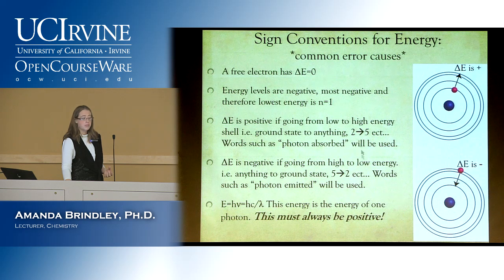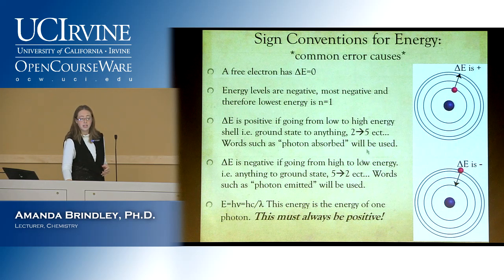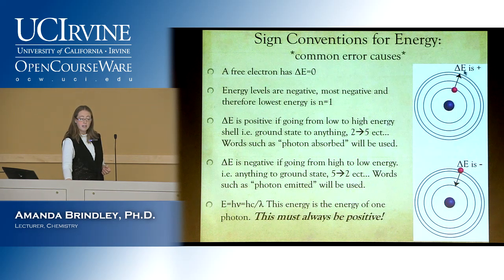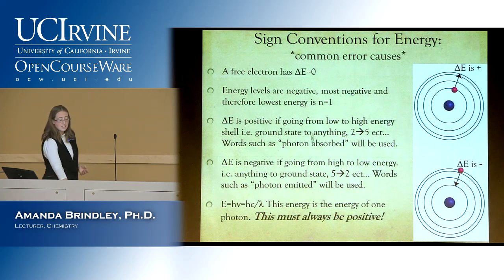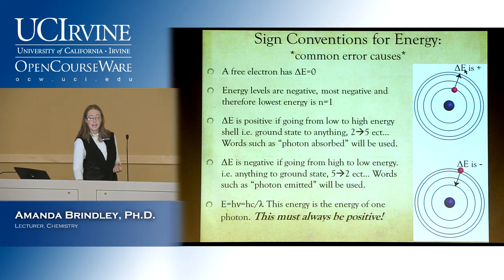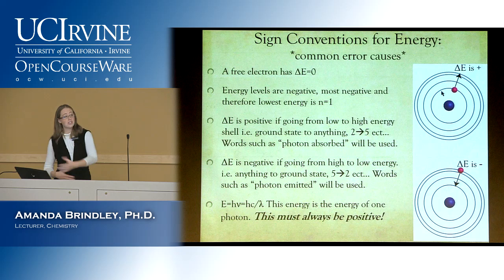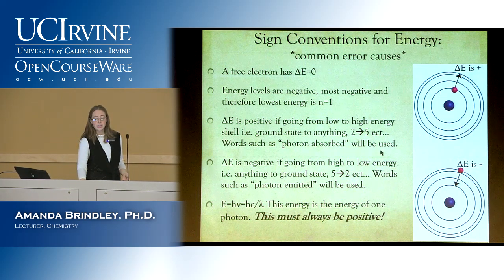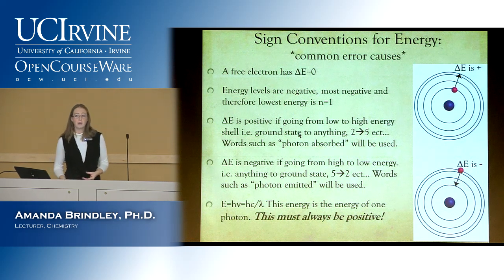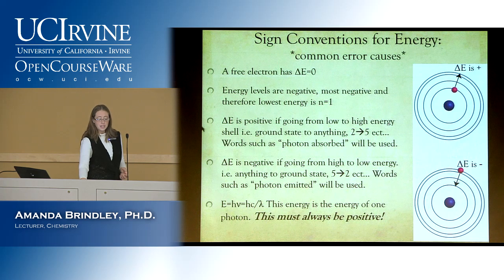Let's think about the two different types of transitions: going up in energy or going down. If we're going from low to high, our final is going to be higher than our initial, making delta E positive — final minus initial, a high minus a low number is positive. Keywords to look for are things like 'photon absorbed,' which cues you that delta E is positive.